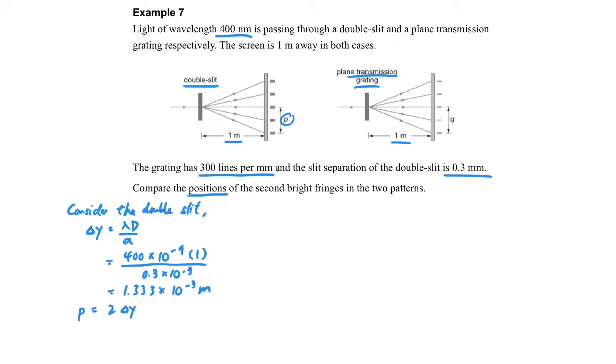So this p is equal to 2 delta y. So if we want to find p, we have to times 2 for it, because this is the second bright fringe, the second order. So we can find that the value is like this. If we convert it to the units that we usually use, you should be aware it's just millimeters - it's 2.67 millimeters.